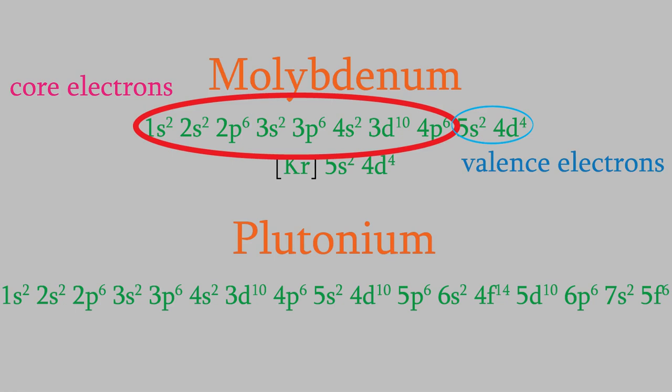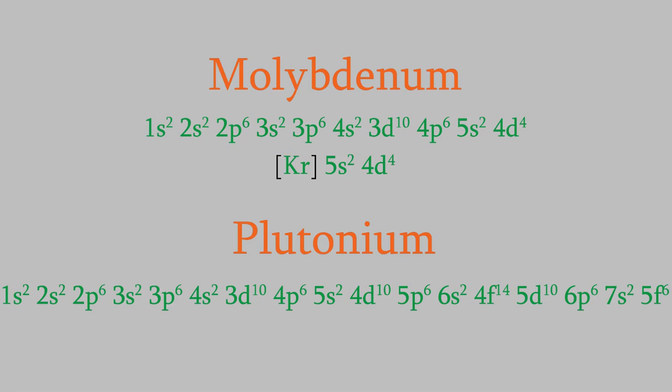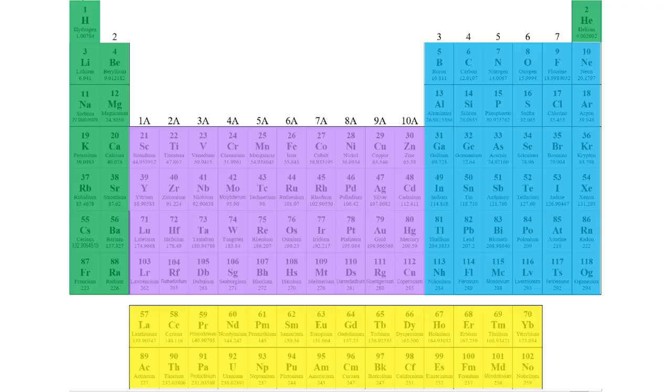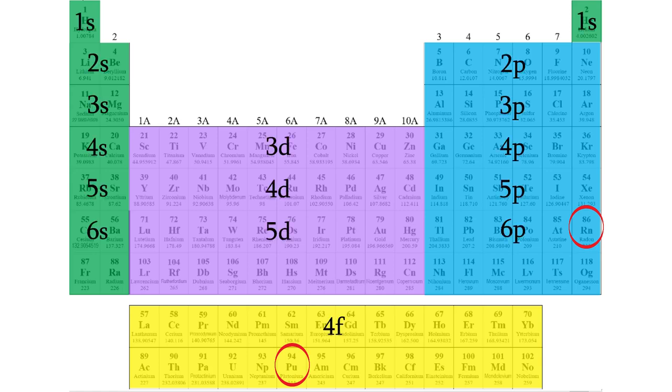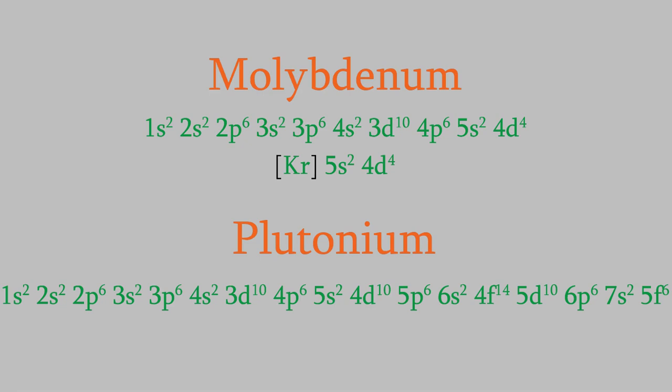All the electrons we replace with the inert gas symbol are called core electrons, and the ones after that are called valence electrons. As we'll see later in this course, it's the valence electrons that do most of the interesting stuff in chemical reactions. The condensed electron configuration for plutonium is an even bigger time saver. The last inert gas before plutonium is radon, whose electron configuration ends with 6p⁶. So the electron configuration for plutonium is [Rn] 7s², 5f⁶. The interesting chemistry plutonium can do involves those last eight valence electrons; the other 86 are core electrons.